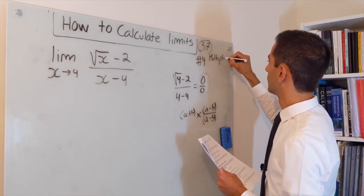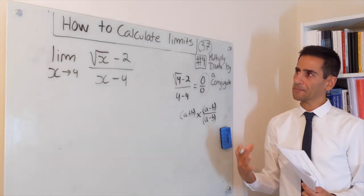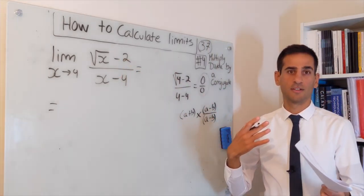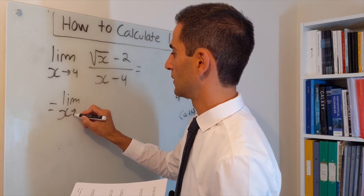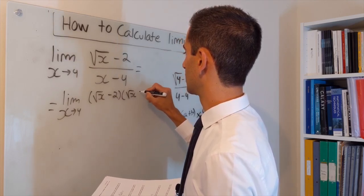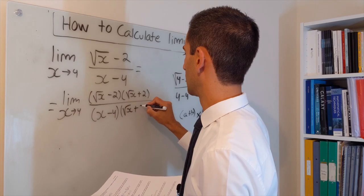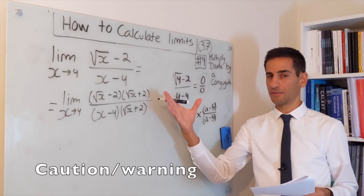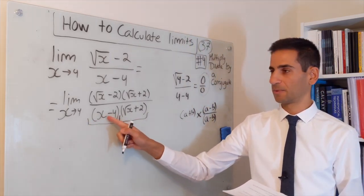This turns out to be method number four, which you find in the lecture notes: multiply and divide by a conjugate. The conjugate of square root of x minus two is square root of x plus two. So this equals the limit when x goes to four of square root of x minus two, times square root of x plus two, divided by x minus four times square root of x plus two. An important thing to be careful about: you're typically wanting to cancel one of these terms.